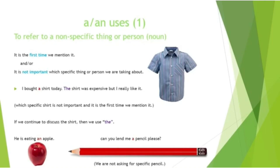The shirt was expensive but I really like it — it is the same noun but we change to the definite article. Another example: 'He is eating an apple' — it is not important to specify which apple. Here is another example: 'Can you lend me a pencil please?' — we are not asking for a specific pencil. It is not important which pencil you give us; we just want any pencil because we need to write something.